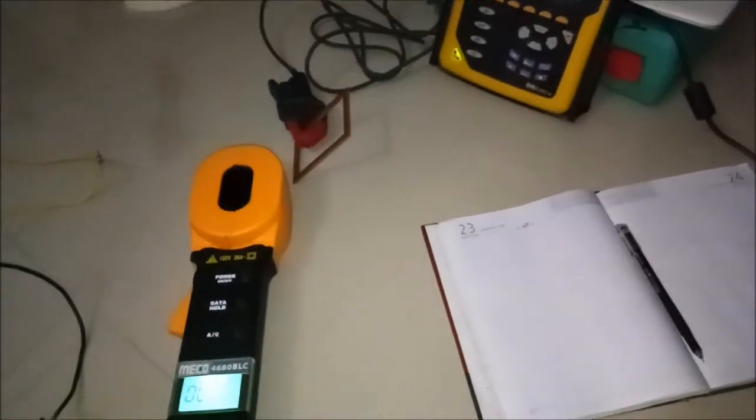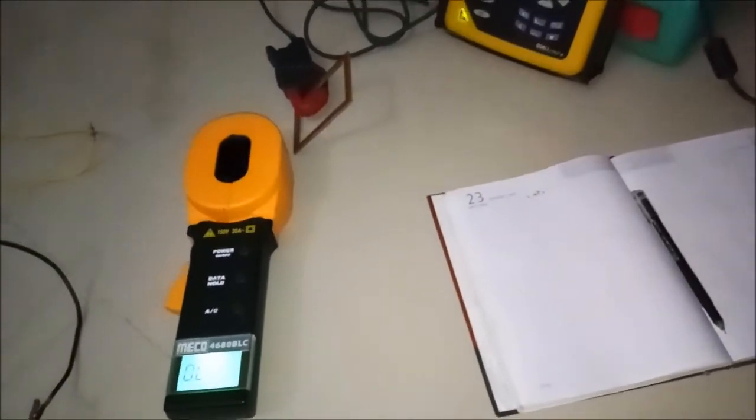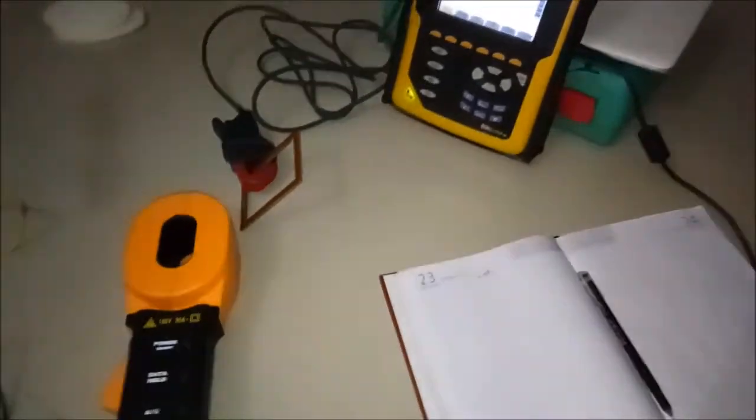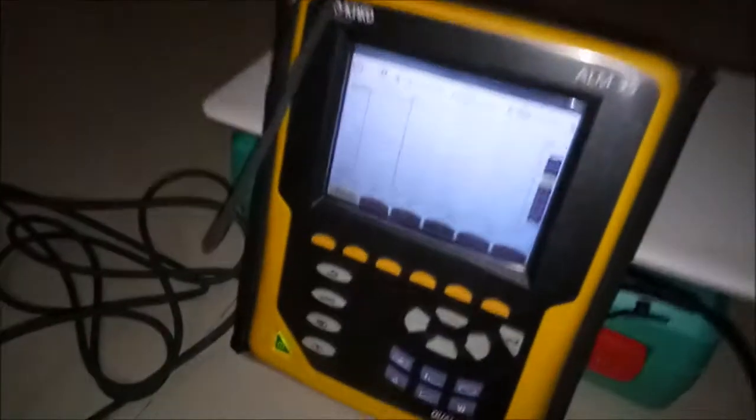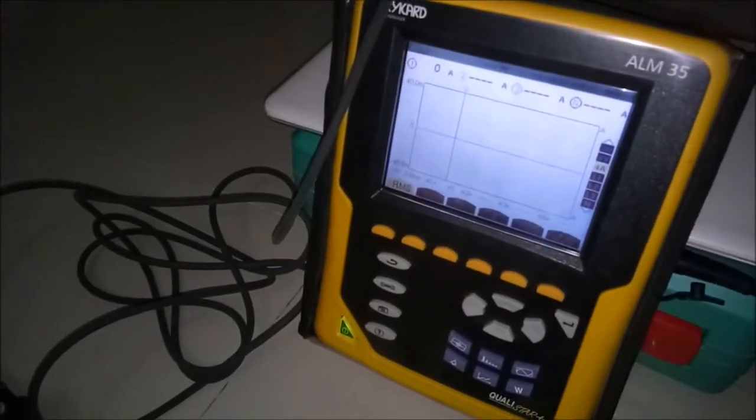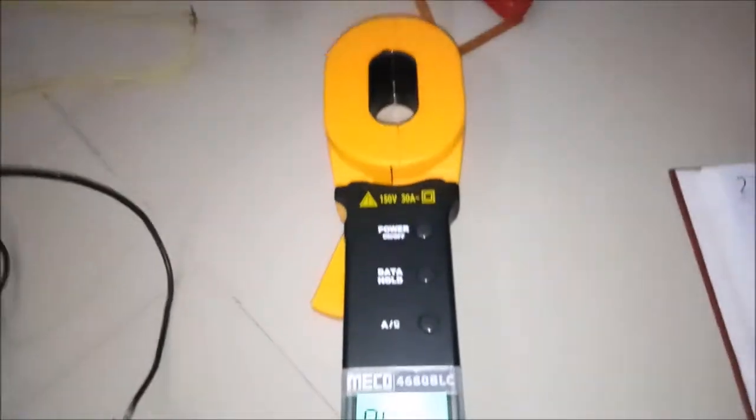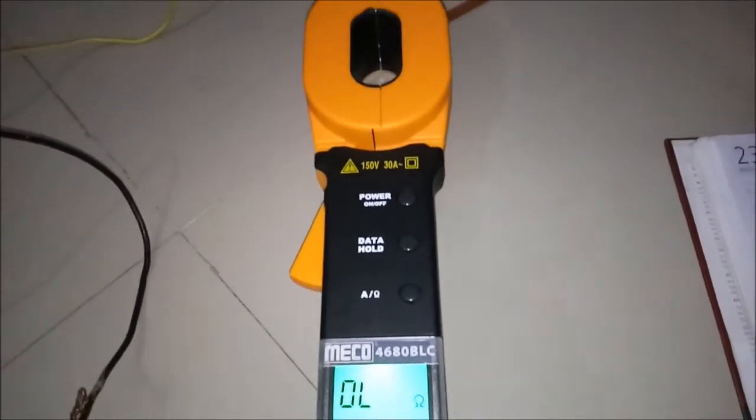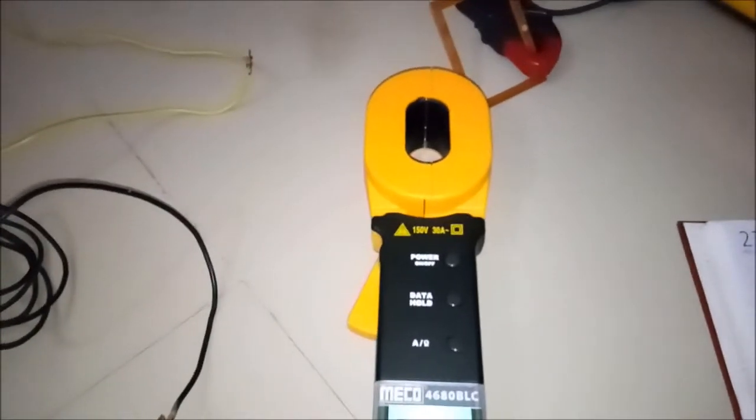Hello, this video intends to explain you how does the clamp-on earth tester work. So here we have made a small setup wherein we have got this 5 ohm resistor loop, then we got an analyzer to measure the current, and we got this Meco make clamp-on earth tester.